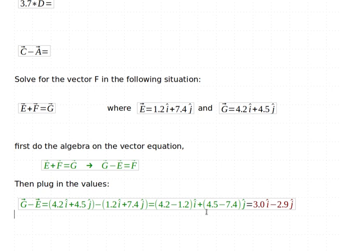And when you do that math, you should come up with your final answer. So this is what F is equal to. So in the end, just to make everything nice and clear on my worksheet, I might clearly indicate my final answer that the vector F is equal to 3.0 I hat minus 2.9 J hat.